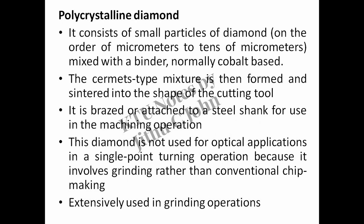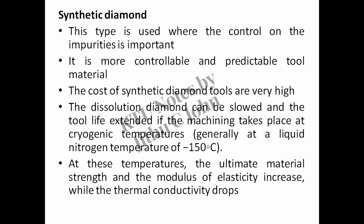Polycrystalline diamond consists of small particles of diamond on the order of micrometers to tens of micrometers, mixed with a binder, normally cobalt based. The cermet-type mixture is then formed and sintered into the shape of the cutting tool, and brazed or attached to a steel shank for use. This diamond is not used for optical applications in single-point turning because it involves grinding rather than conventional chip making. Synthetic diamond is used where control on impurities is important; it is a more controllable and predictable tool material. The dissolution of diamond can be slowed and tool life extended if machining takes place at cryogenic temperatures, generally at liquid nitrogen temperature of -150°C. At these temperatures, the ultimate material strength and modulus of elasticity increase, while thermal conductivity drops.